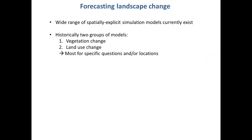To start, just a little bit of background: there are literally dozens of different landscape simulation models that have been developed in the literature, and you can organize these in various ways. The simplest is to group them into two broad categories: the first are models used to project changes in vegetation over time, principally developed by ecologists, and there's also a parallel group of models developed principally by geographers to predict changes in land use and land cover.